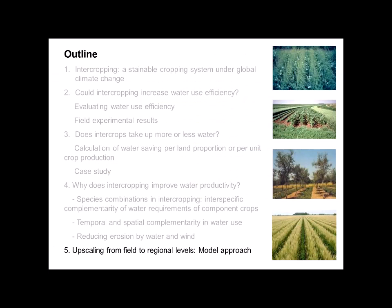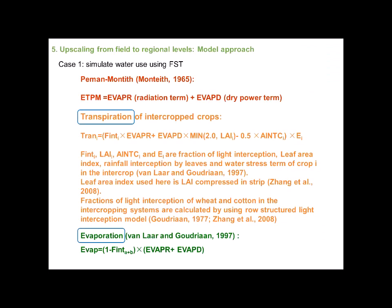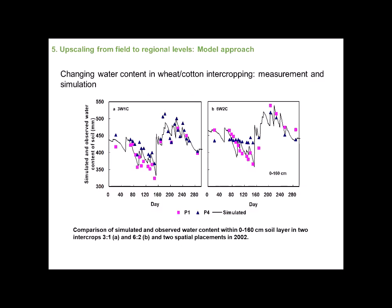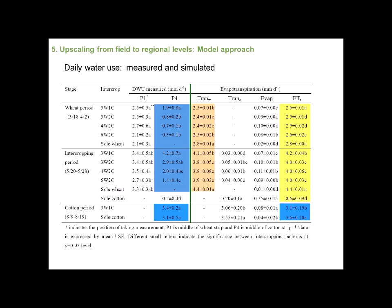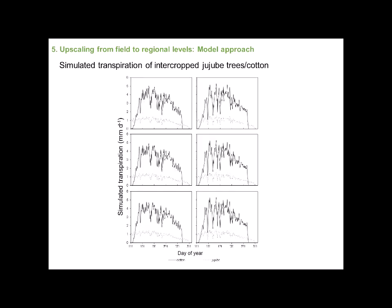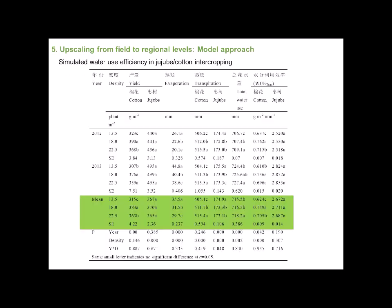All the results mentioned above are at field level. The modeling approach gives us a good way to upscale from field to regional level. In intercropping systems, we can use FST models to calculate transpiration and evaporation based on canopy cover. We simulated soil water content and daily water use in wheat-cotton intercropping systems, and simulated results showed good agreement with observed results. We also simulated transpiration, evaporation, and water use efficiency in jujube tree-cotton intercropping systems using this model.